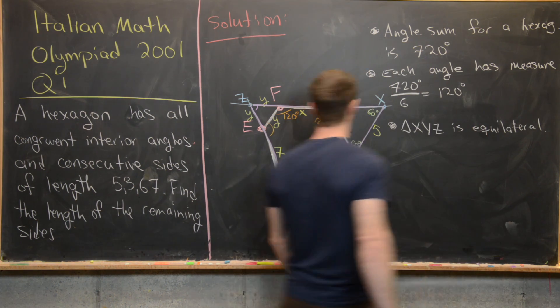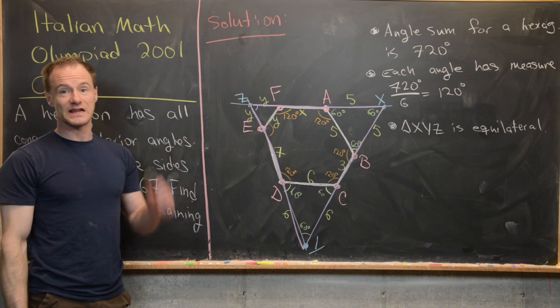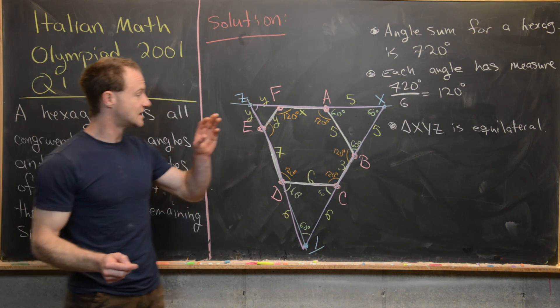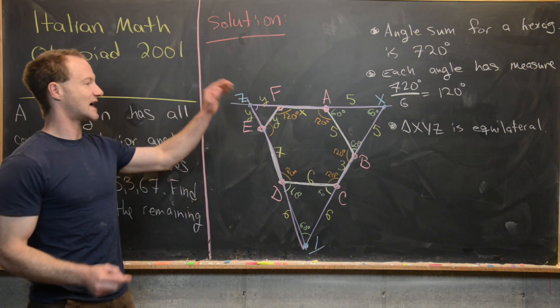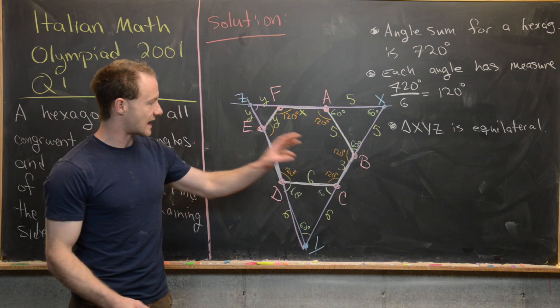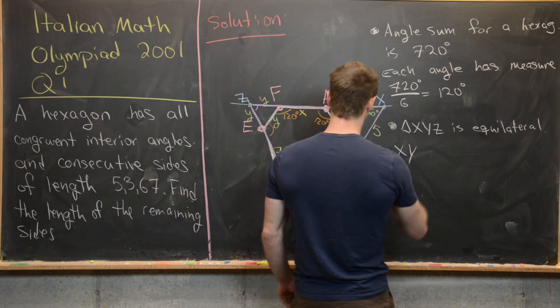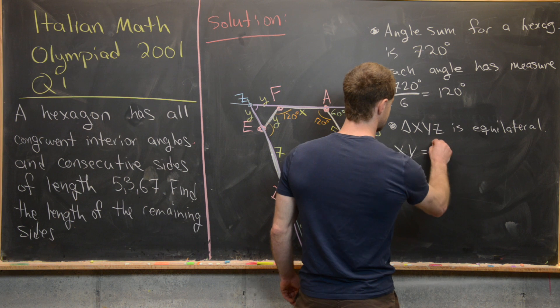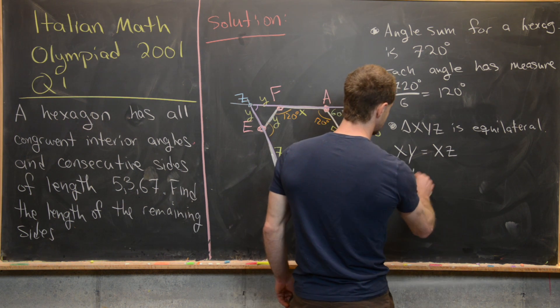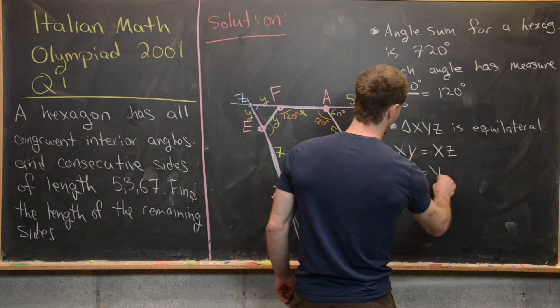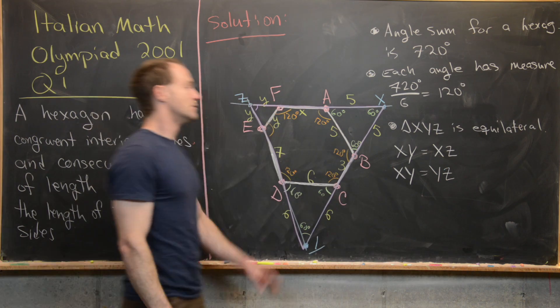But now that's going to give us a system of equations corresponding to the side lengths. So if it's equilateral, then all the side lengths are the same. So side length XY has to be equal to side length XZ, and side length XY has to be equal to side length YZ.